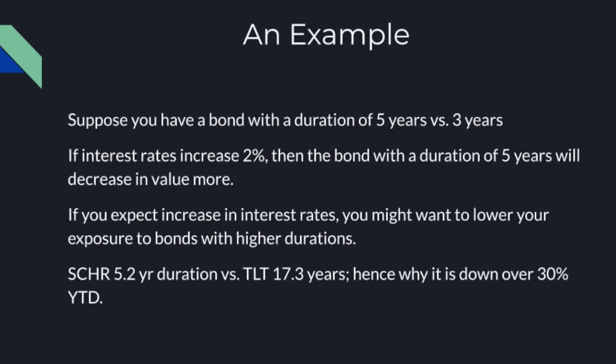Here's my example. Suppose you have a bond with a duration of five years versus a bond with a duration of three years. If interest rates increase 2%, then the bond with a duration of five years is going to decrease in value more. The one with the longer duration always decreases in value more if interest rates go up. It's very important to know that interest rates and bond prices are inversely related.